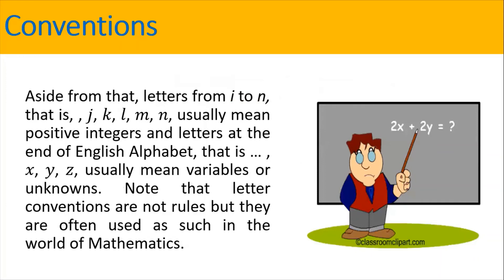Aside from that, letters from I to N, that is J, K, L, M, N, usually mean positive integers, and letters at the end of English alphabet, that is X, Y, Z, usually mean variables or unknowns. Note that letter conventions are not rules, but they are often used as such in the world of mathematics.